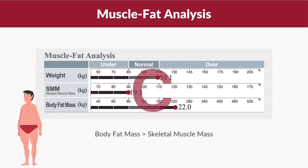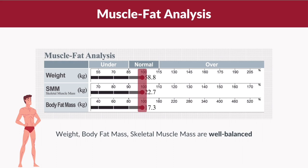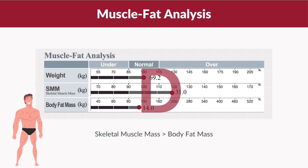By connecting the ends of each bar, you can determine your body shape. The first shape is C, which stands for cautious, where your body fat mass is more than your skeletal muscle mass. The second shape is I, which stands for ideal, where the recommended portions of weight, skeletal muscle mass, and body fat mass are balanced and in a parallel line. The third shape is D, which stands for develop, where the skeletal muscle mass is more than the body fat mass.